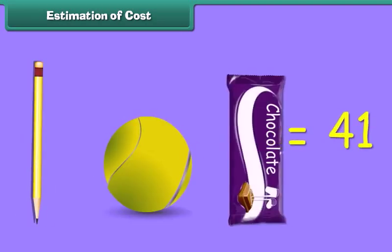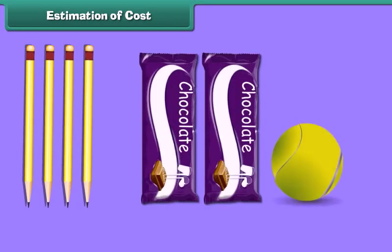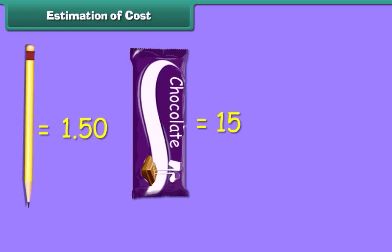Estimation of cost means calculating the total cost of different items. We understand it by taking an example. What will be the total cost of four pencils, two chocolates, and one tennis ball? The unit cost of a pencil is 1 rupee 50 paisa, the unit cost of a chocolate is rupees 15, and a tennis ball is rupees 5.